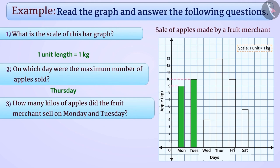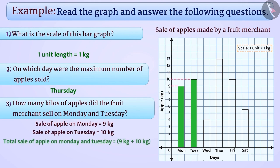Here, we are given the scale 1 unit length is equal to 1 kg apples, which means 9 kg of apples were sold on Monday and 10 kg on Tuesday. To calculate the total sale made on Monday and Tuesday, we will add the total sale made on both days, which will result in 19 kgs. From this, we can infer that the fruit merchant sold 19 kgs of apples on Monday and Tuesday.